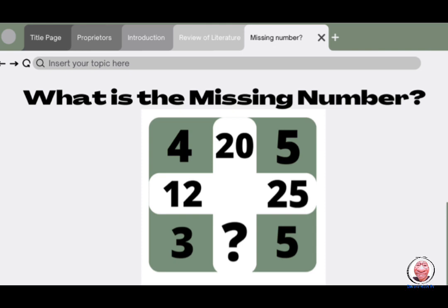First is the 20. To get the 20, we multiply the numbers that are around it, which is 4 and 5. And if we multiply 4 and 5, it results in 20. That's also what we do in order to get 25 and 12. To get 25, we do 5 times 5 equals 25. 4 times 3 equals 12.